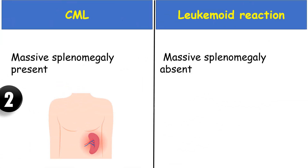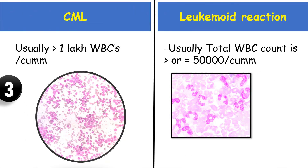Chronic myeloid leukemia presents with massive splenomegaly, whereas in leukemoid reaction this massive splenomegaly is absent. In chronic myeloid leukemia the count usually goes beyond 1 lakh per cubic millimeter, whereas in leukemoid reaction the WBC count is more than or equal to 50,000 — rarely it can reach 1 lakh.